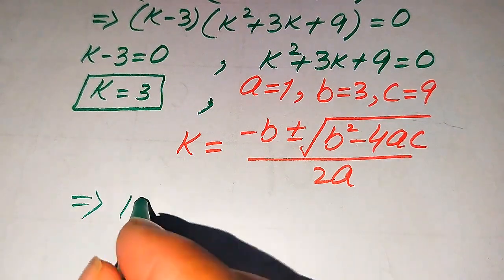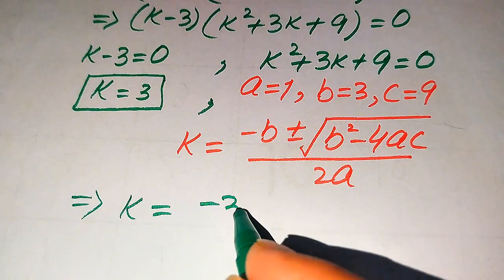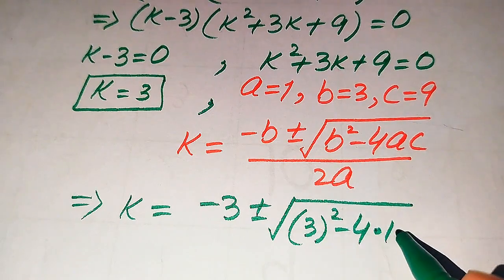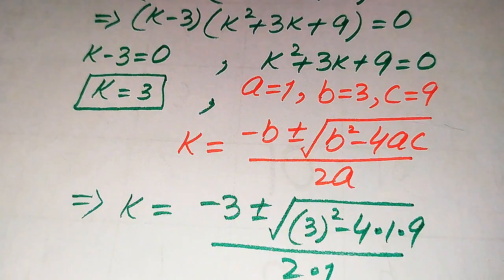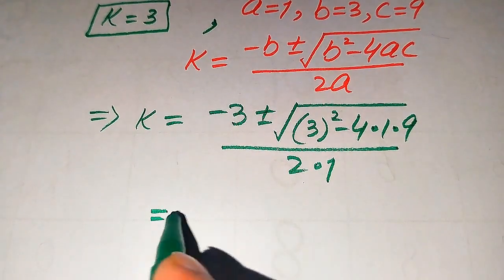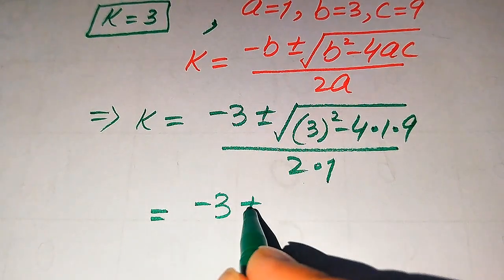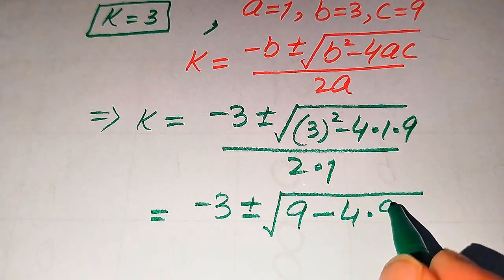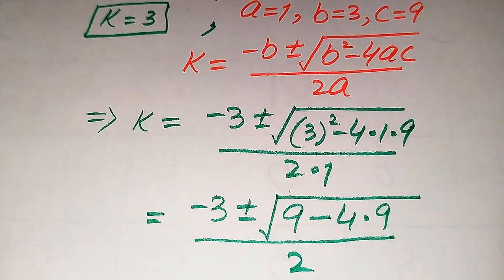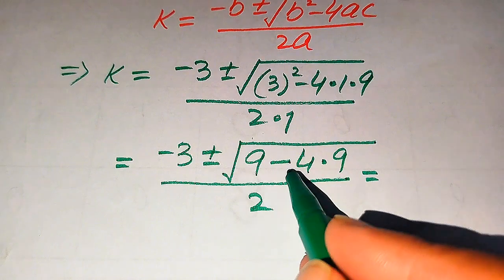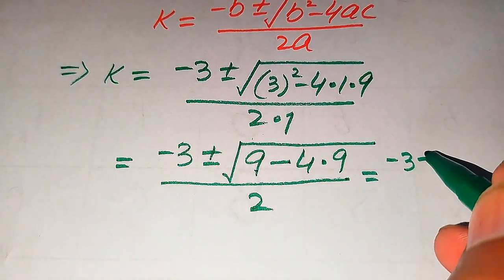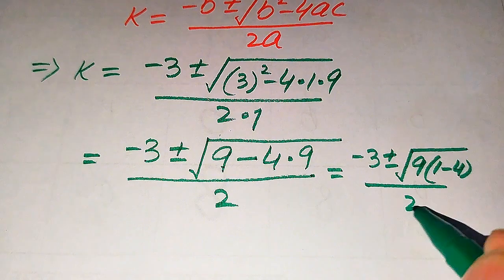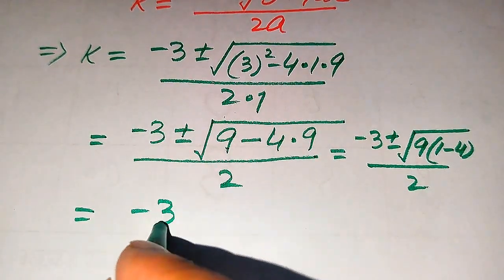Substituting the values, k equals (minus 3 plus or minus the square root of 3 squared minus 4 times 1 times 9) divided by 2 times 1. This simplifies to (minus 3 plus or minus the square root of 9 minus 36) divided by 2, which is (minus 3 plus or minus the square root of 9 times (1 minus 4)) divided by 2.